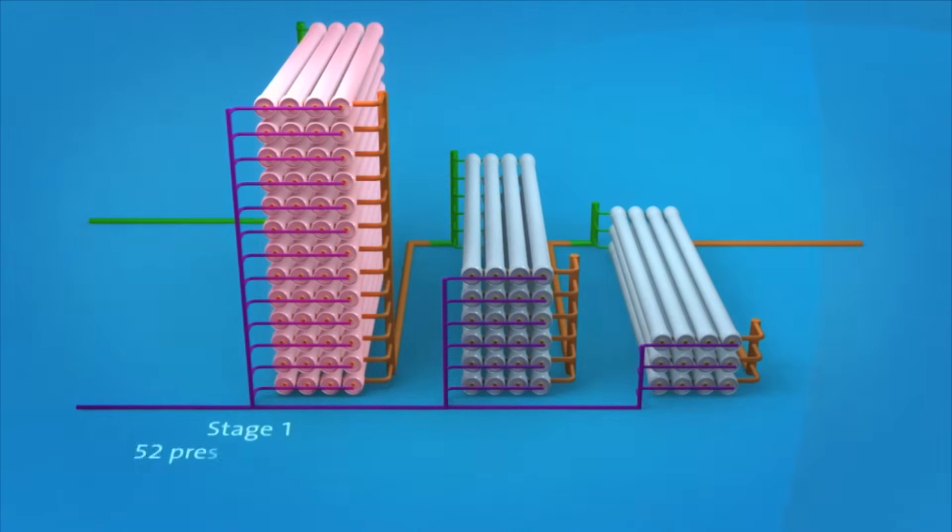Stage one has 52 pressure vessels, stage two has 24 pressure vessels, and stage three has 12 pressure vessels.